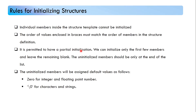It is permitted to have partial initialization. If there are three members inside the structure and you wish to initialize only two of them, that is also fine. For the one that we don't initialize, the value will automatically be taken as the default value. For example, if you are not initializing any value for an integer member, then 0 will be assigned. For strings, a null character will be assigned. So we can initialize the structure partially as well.